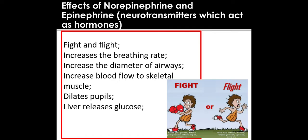We need to increase the flow of blood to our skeletal muscles so we've got more oxygen available for aerobic respiration to make ATP for muscle contraction. It will also take away waste products such as carbon dioxide from the muscles. It's going to cause our pupils to dilate to let in more light so we're more aware of our surroundings, and it's going to cause the liver to release more glucose, which is needed for aerobic respiration.